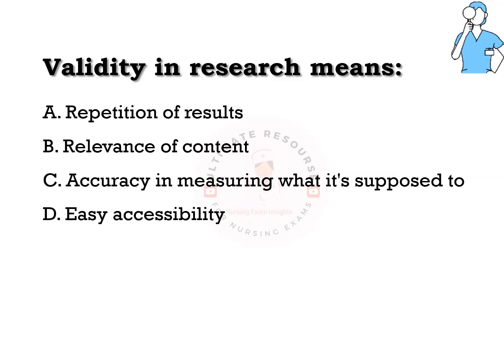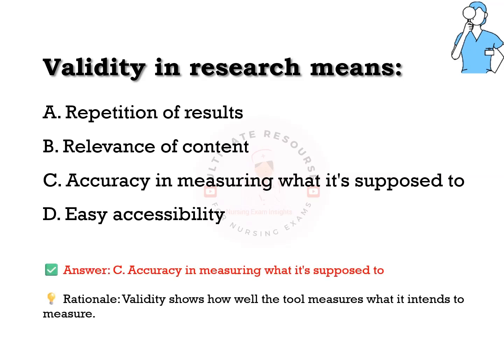Validity in research means: options are a) repetition of results, b) relevance of content, c) accuracy in measuring what it's supposed to, d) easy accessibility. The answer is c) accuracy in measuring what it's supposed to. Validity shows how well the tool measures what it is intended to measure.